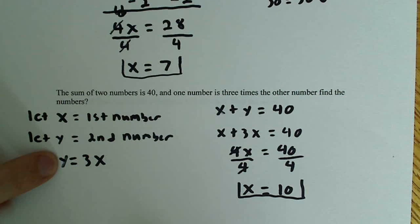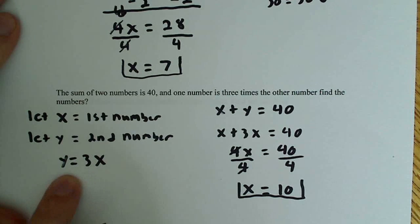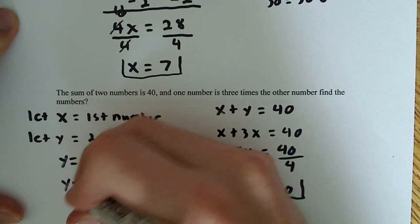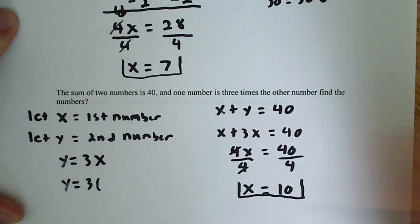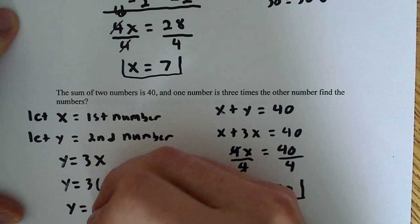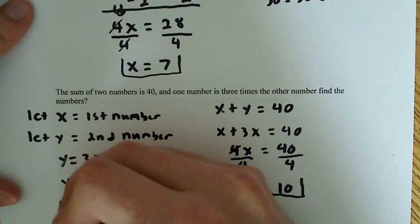Now, if we want to know what y is, we have a really simple equation that we put together over here where y is equal to 3x. So if we want to know what y is, all we have to do is simply plug in right here. So y is equal to 3 times 10, so y is equal to 30. So that's our second number.